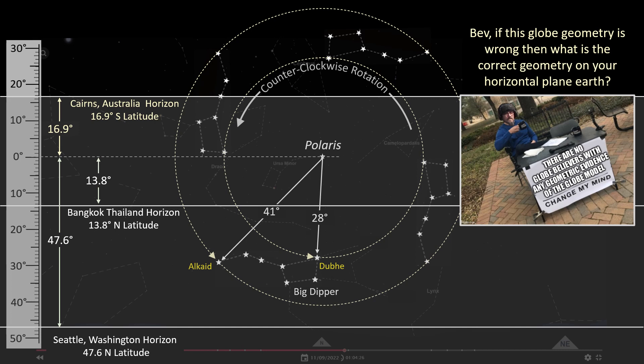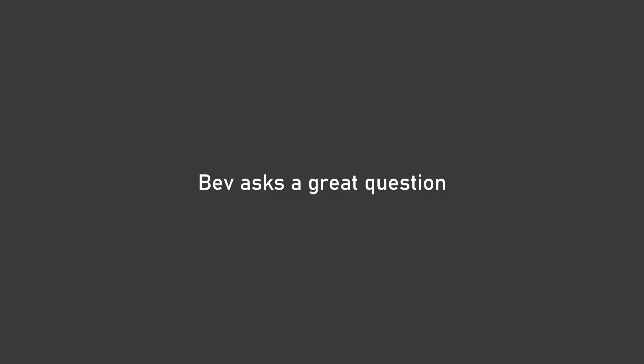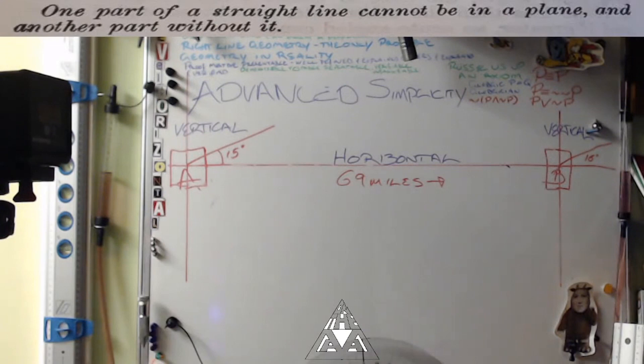So again, Bev, if this globe geometry is wrong, then what is the correct geometry on your horizontal plane Earth? Let's have one final listen to Bev. Or did everybody else have some other different idea about it? People I've talked to did have, you know, a different understanding, because I don't think anybody's ever showed them the simple geometric version of how this works.